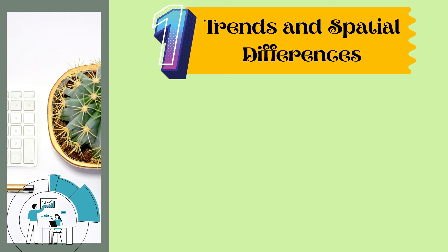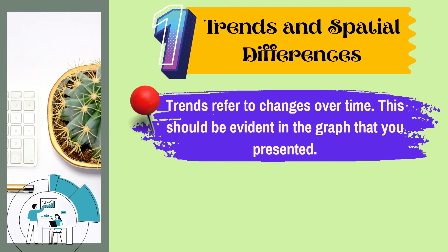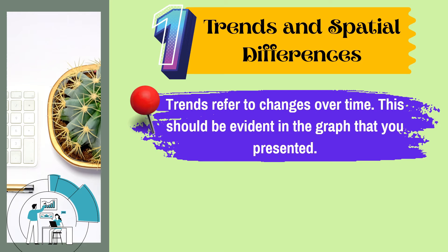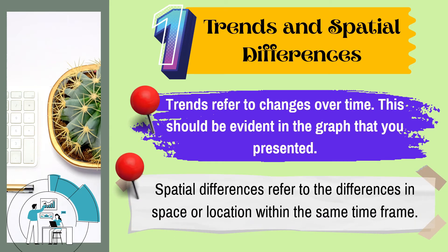What comprises the discussions? The first part is trends and spatial differences. Trends refer to changes over time — are your results showing an increasing, decreasing, or constant direction? This should be evident in the graph you presented. Spatial differences refer to differences in space or location within the same time frame — for example, is there a significant difference between two groups examined, or a difference in morphological measurements of one group from one location compared to another?